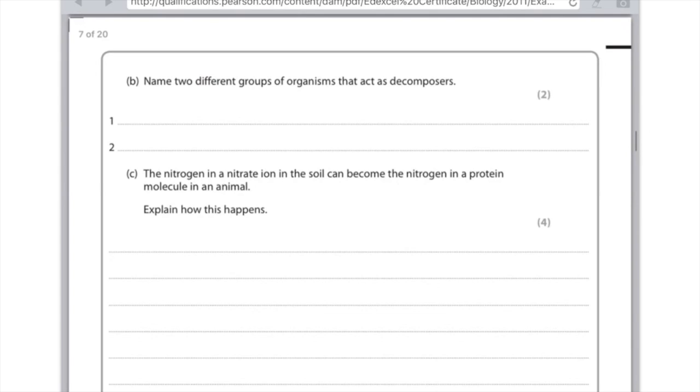Remember that's a type of transfer using energy. Then you could say that that nitrate is used to make amino acids or plant protein and then obviously this may get eaten by an animal which will give you a fourth mark.